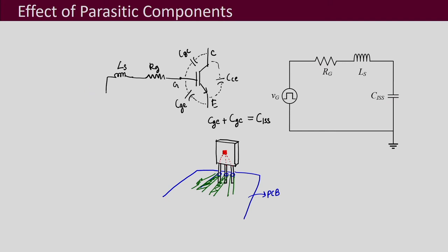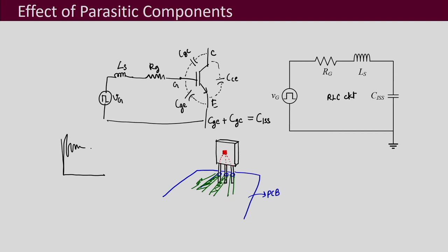The gate driver output voltage VG comes in and is connected to the emitter. If you draw the equivalent circuit, you can see it is an RLC circuit that is formed. And you know that an RLC circuit can have an oscillatory response — an oscillatory response if it is underdamped.